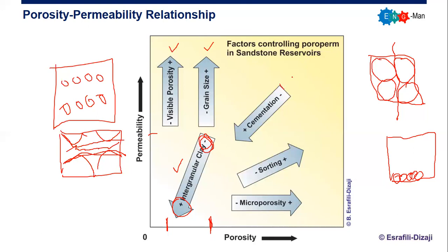The fourth parameter is cementation. If we have lower or fewer cementation, we will have bigger porosity and higher permeability, because cement itself will take up some space. With more cement, porosity will decrease and permeability will also decrease. If you have less cement, then the porosity and permeability will increase.